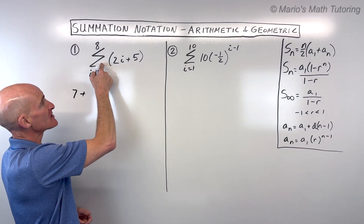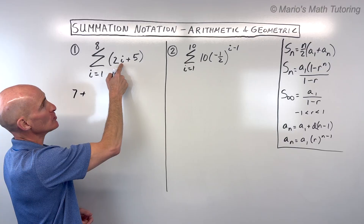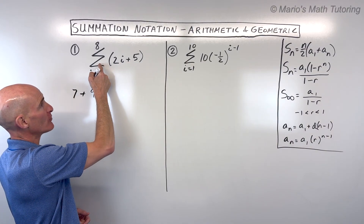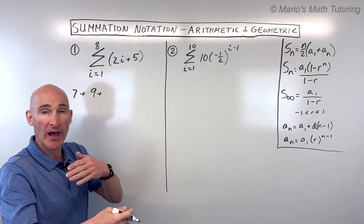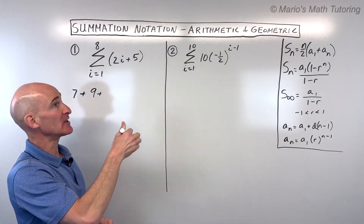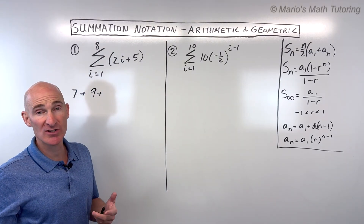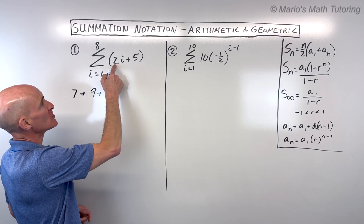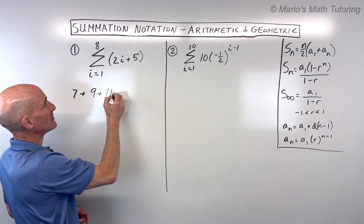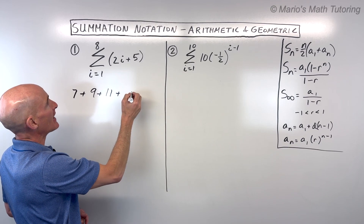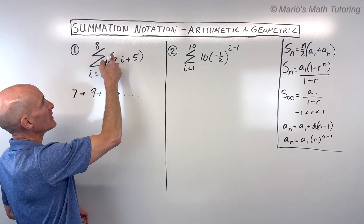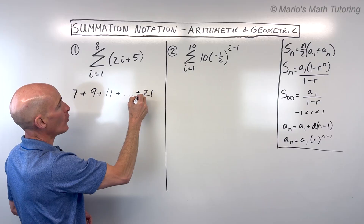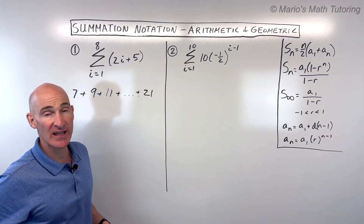Then we go to the second term. When i is two, two times two is four plus five is nine. Then I put three in and you keep working your way up sequentially until we get to the eighth term, which is the last term. So three would be two times three is six plus five is 11, and so on. Putting in eight, we get two times eight is 16 plus five is 21. And we add up all these terms together.